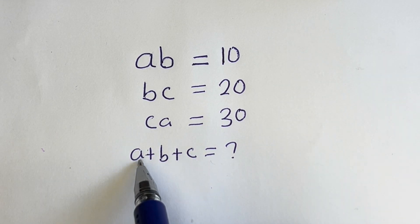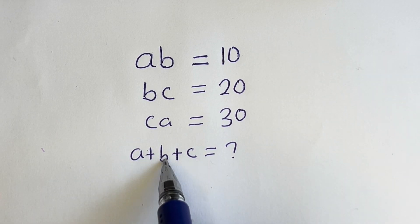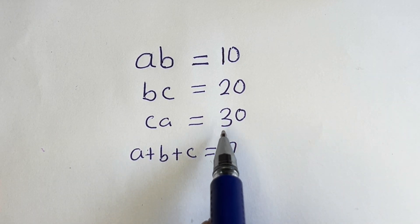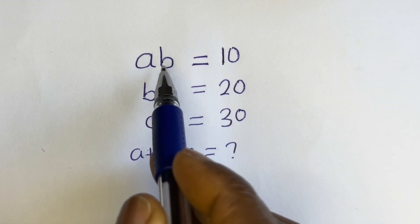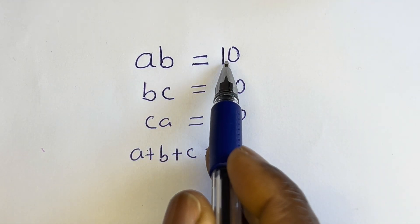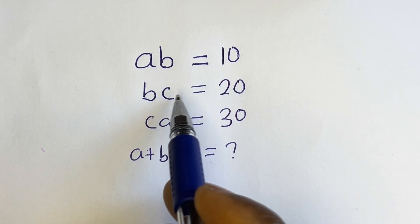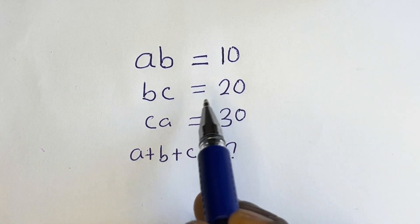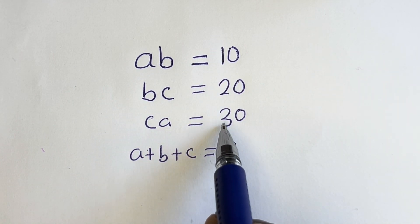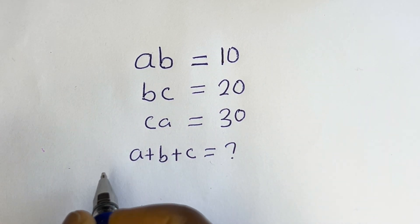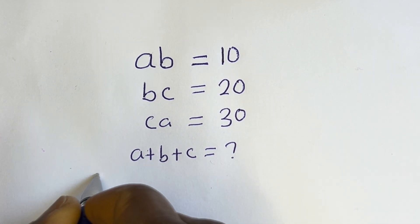Hello. How to solve for a plus b plus c in this equation: ab is equal to 10, bc is equal to 20, ca is equal to 30. Solution.